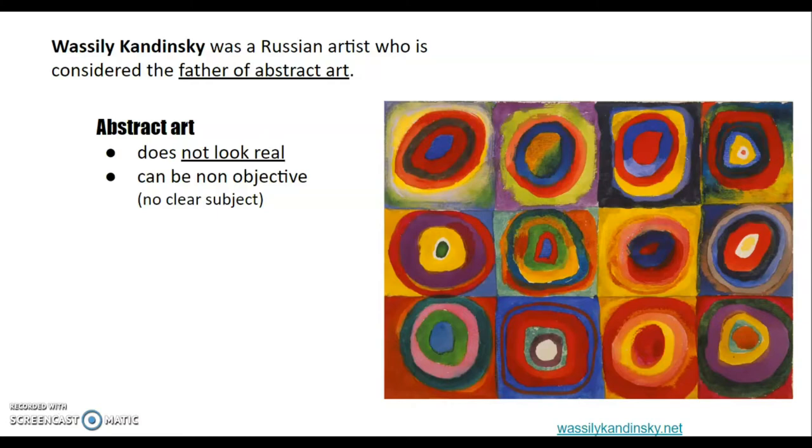Abstract art does not look real. So this isn't a picture of a person, is it? It's not a puppy dog. Not a picture of a beautiful sunset. It's non-objective. It has no clear subject. And we see a lot of colors and a lot of shapes, but no actual picture of something.